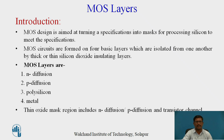Mask design is aimed at turning a specification into masks for processing silicon to meet the design specification. The mask circuits are formed on four basic layers which are isolated from one another by thick or thin silicon dioxide insulating layers. The mask layers in the CMOS VLSI design process are: N-diffusion, P-diffusion, polysilicon, and metal. The thin oxide mask region includes N-diffusion or P-diffusion and the transistor channel.